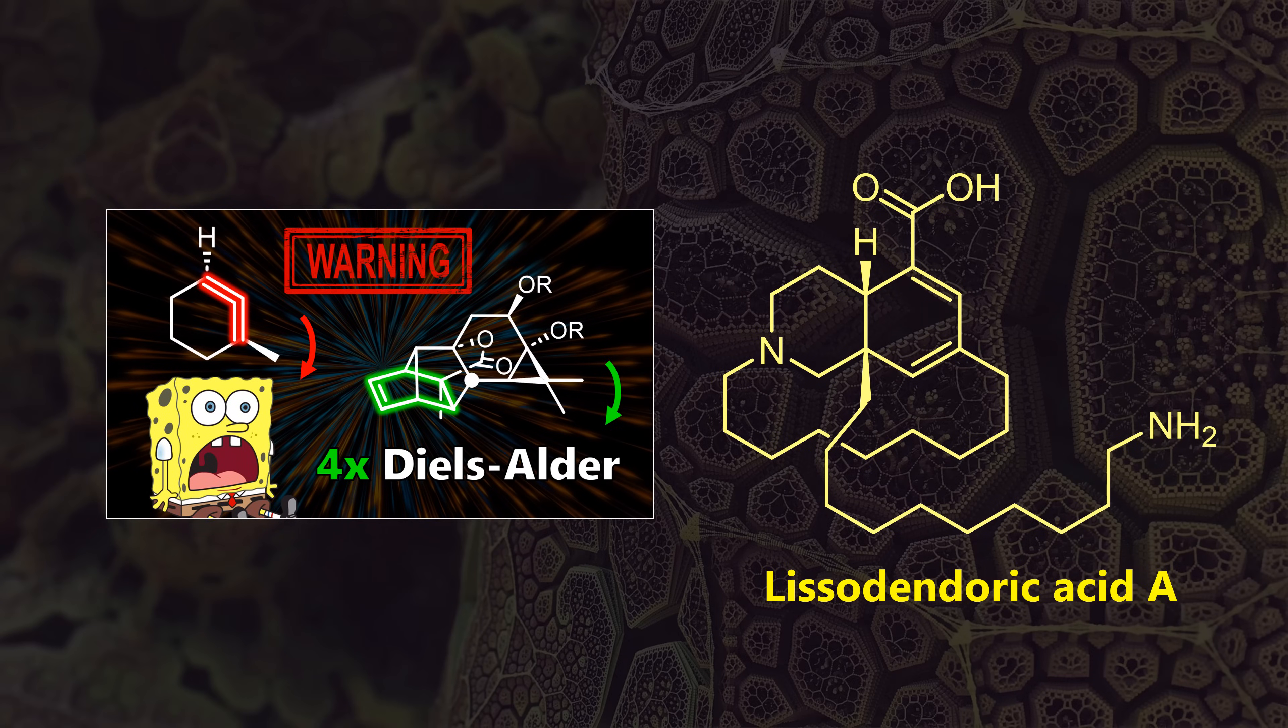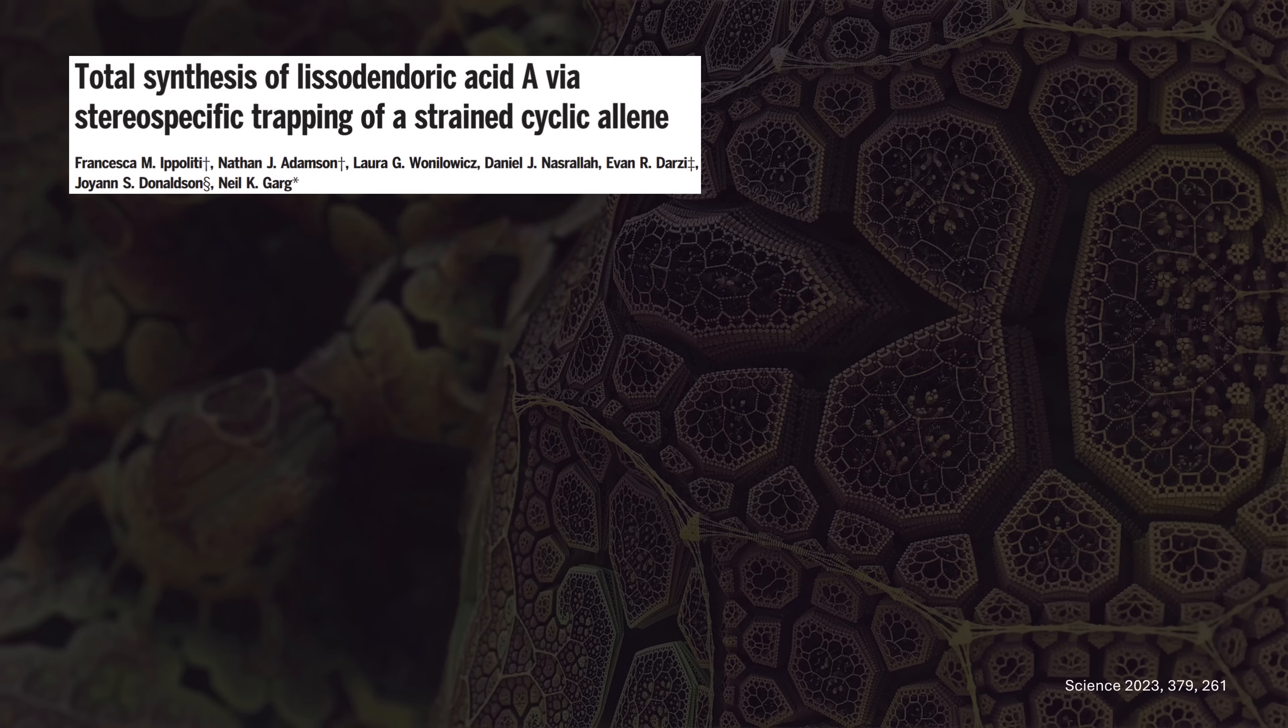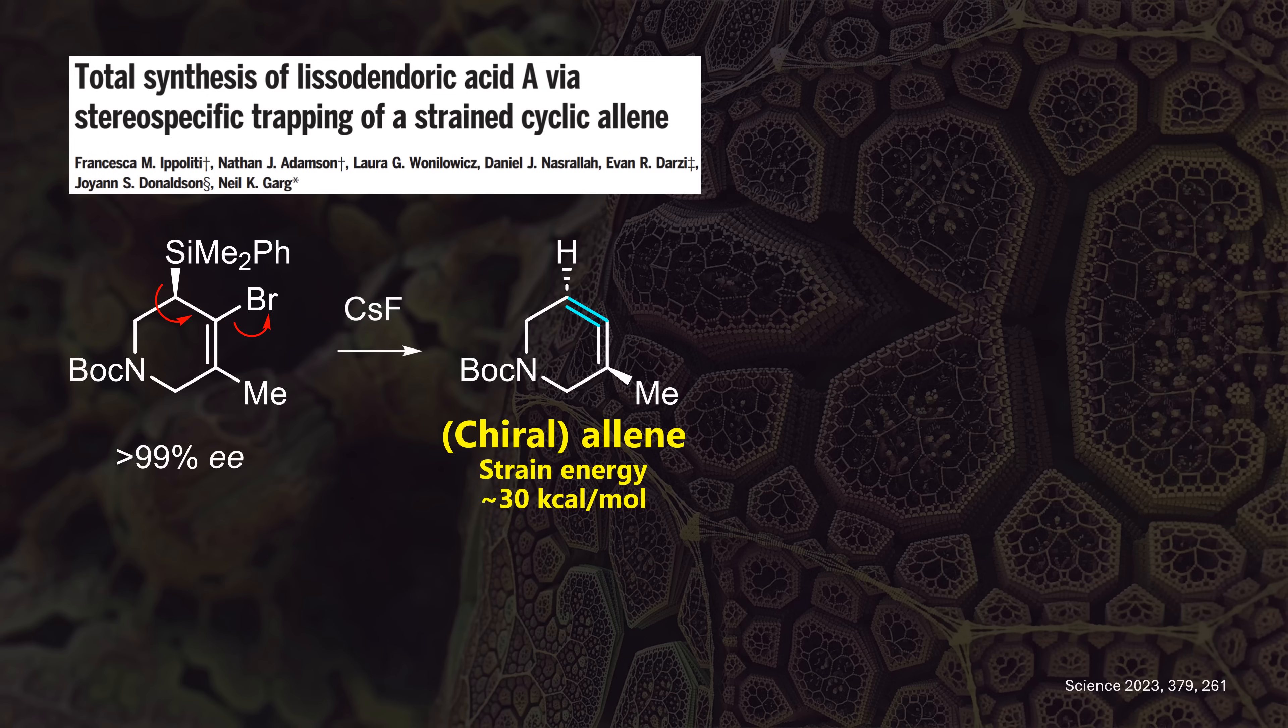This is where a new study from the Garg lab comes in. This research group is well known for elucidating and leveraging strained intermediates. Loyal viewers will remember the out-of-the-box synthesis of lysodendoric acid A, a sponge-derived natural product. There we saw that a fluoride-triggered elimination generated a crazy cyclic allene. And to up the ante, it's even chiral. Its strain energy of roughly 30 kilocalories per mole is lower than anti-Bredt olefins, but still not a joke.